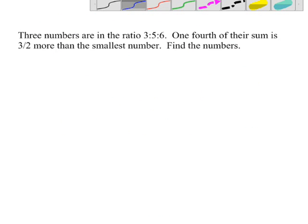Three numbers are in the ratio 3 to 5 to 6. We're going to need to represent those numbers. Remember that when they're in a ratio, they each need to be multiplied by the same number. So we're going to say those numbers are now 3x, 5x, and 6x.